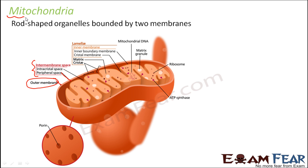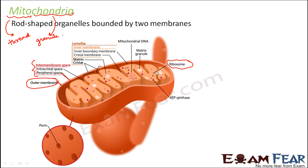Now, why is it named mitochondria? The word 'mito' means thread, and the term 'chondria' means granule. So it refers to thread-like structures with granules over them. The granules here are in the form of ribosomes, which are present as granules over the mitochondria.